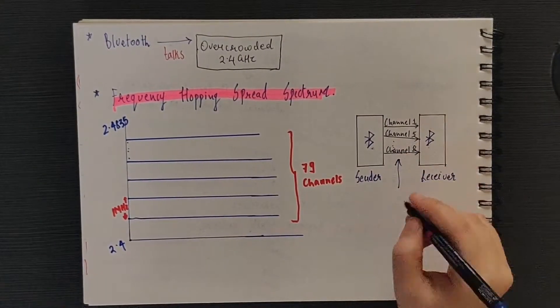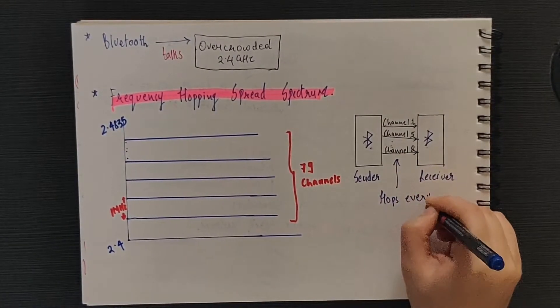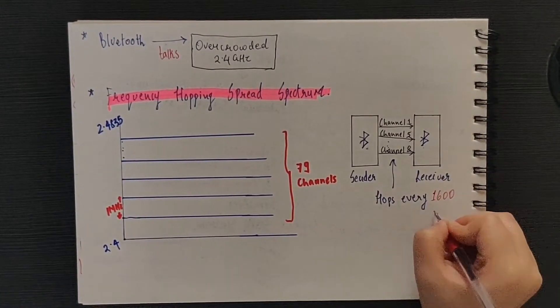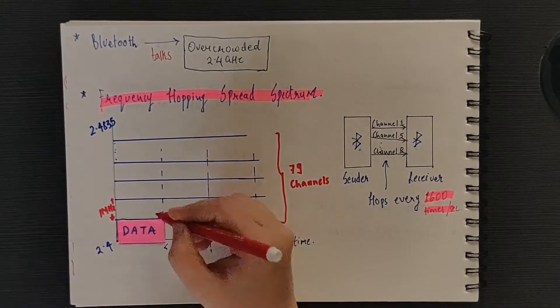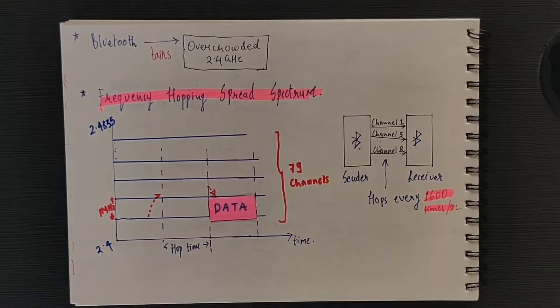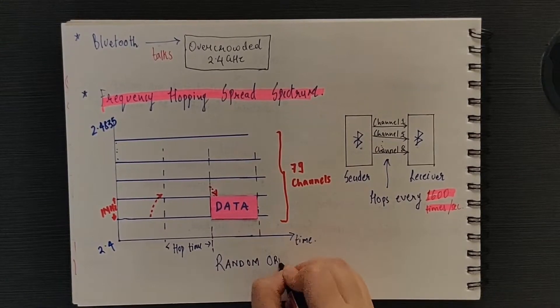An actively communicating Bluetooth device changes channel every 1600 times per second. So this hopping around is performed in a fairly random order, so that no particular channel is used much more than any other channel.